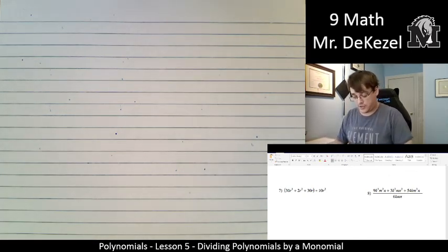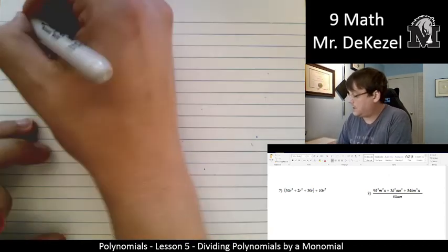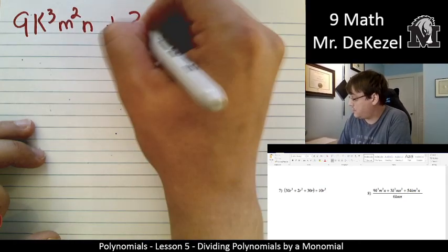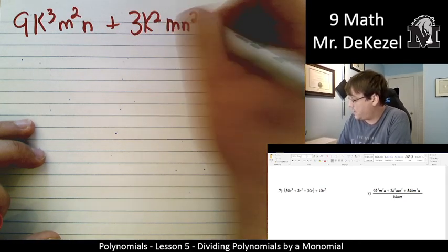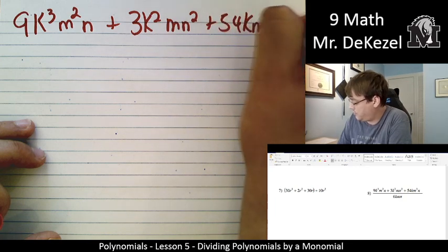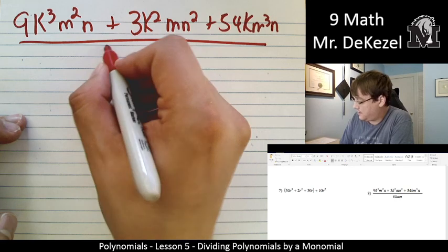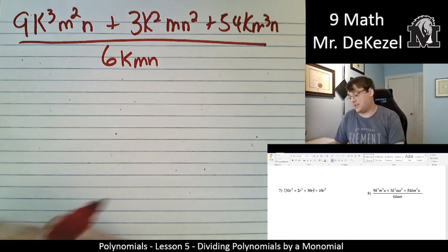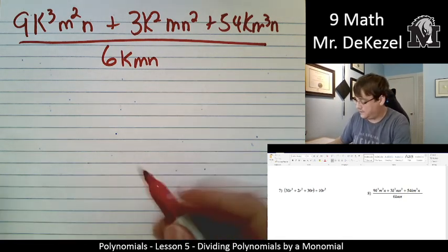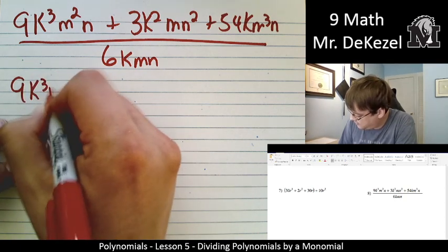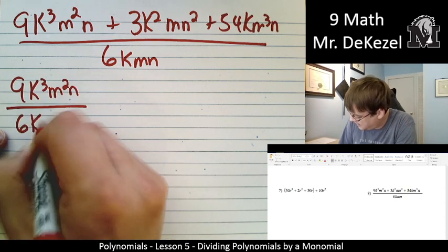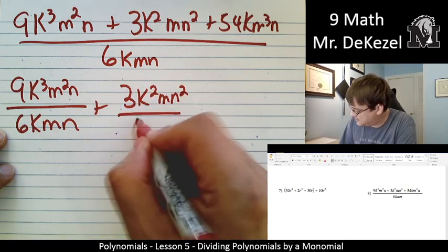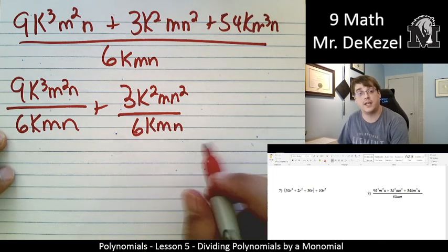Let's do one more. And I want to change the color just because. We've got 9k³m²n + 3k²mn² + 54km³n. All divided by 6kmn. Oh my. That's okay. It looks more complicated than it is. Let's just write it separately and we'll work each part out individually. So we have 9k³m²n divided by 6kmn. 3k²mn² divided by 6kmn. Just writing it individually.